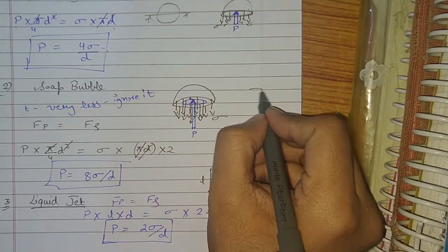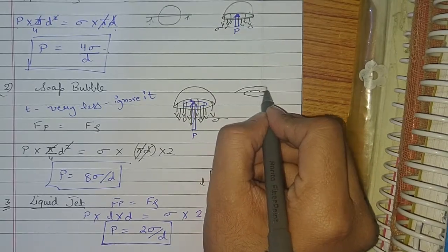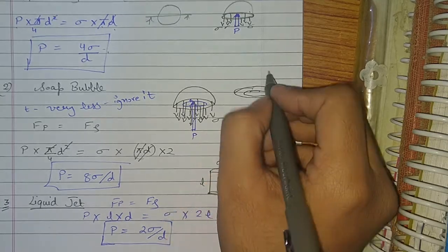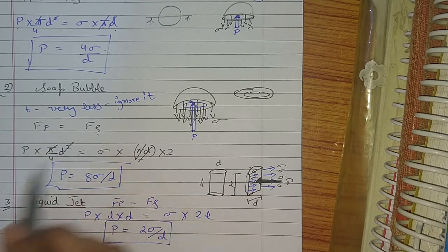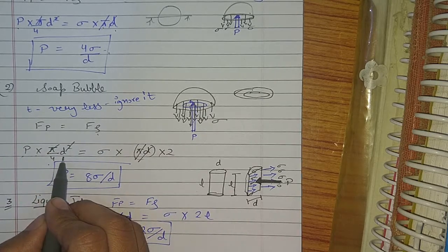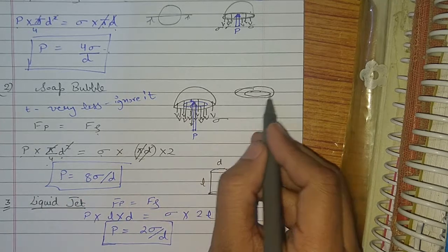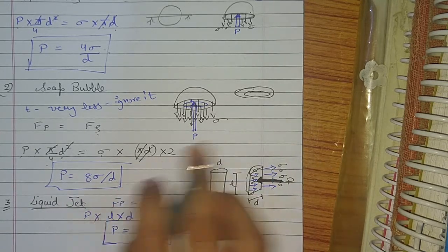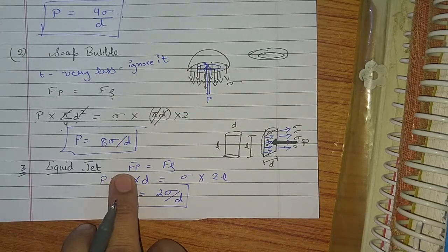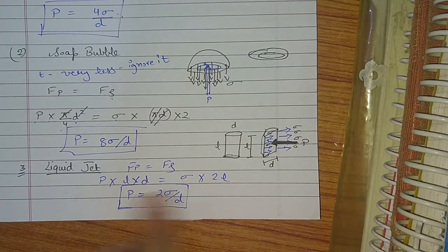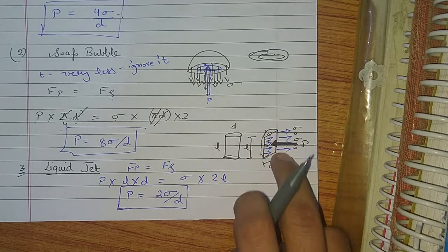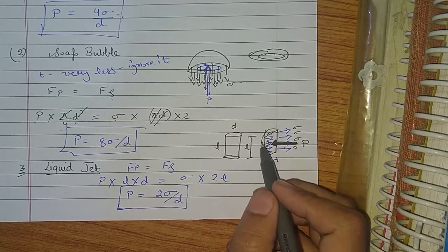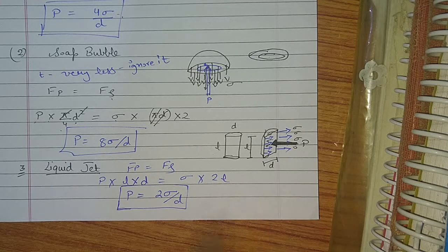In case of a soap bubble we have two surfaces. Ignoring thickness, pressure force equals surface tension force: P·(π/4)·D² equals sigma·π·D times two (for two surfaces). For a liquid jet, F_P equals F_S: P·L·D equals sigma·2L, because surface tension acts along two lines. So P equals 2σ/D. Thank you.